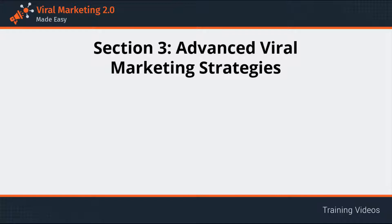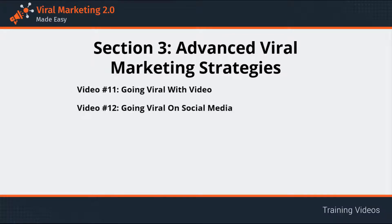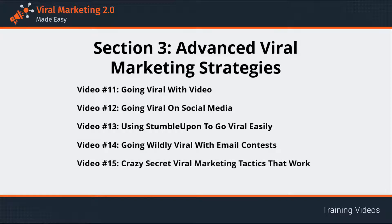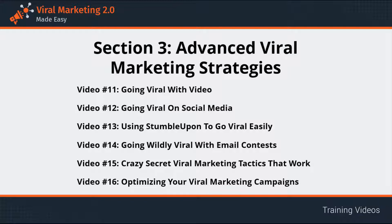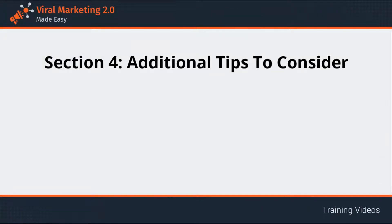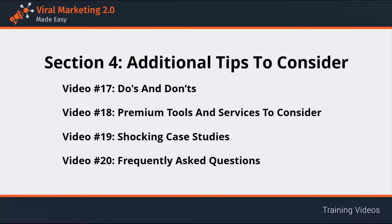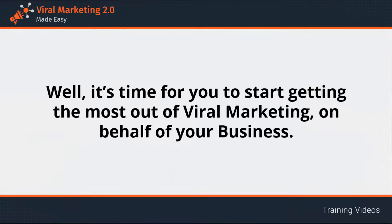Section 3: Advanced Viral Marketing Strategies, in videos 11 through 16, covers going viral with video, going viral on social media, using StumbleUpon to go viral easily, going wildly viral with email contests, crazy secret viral marketing tactics, and optimizing your campaigns. Section 4: Additional Tips, in videos 17 through 20, covers do's and don'ts, premium tools and services, shocking case studies, and frequently asked questions. It's time for you to start getting the most out of viral marketing.